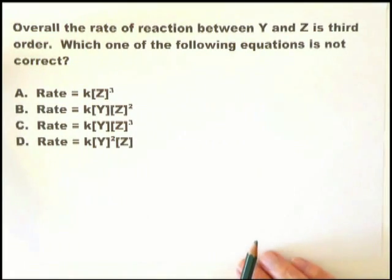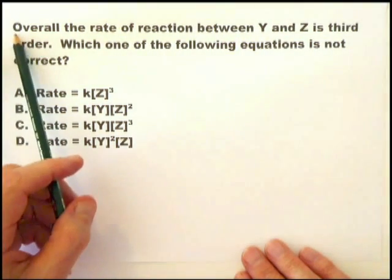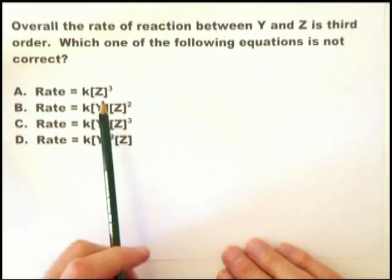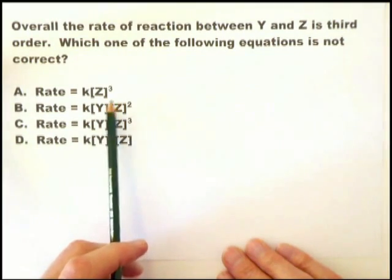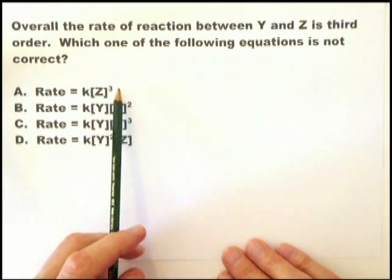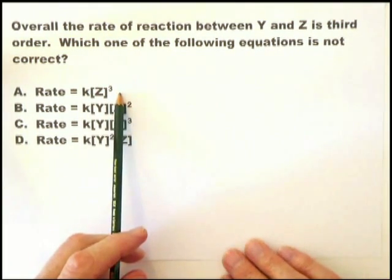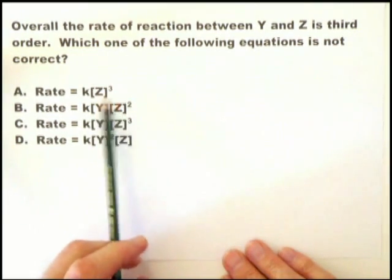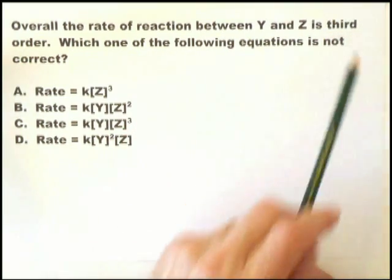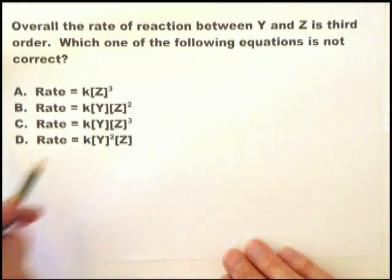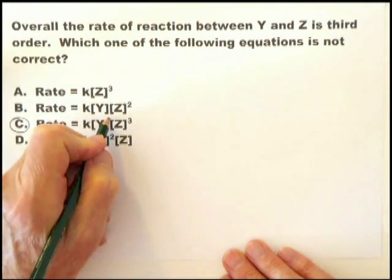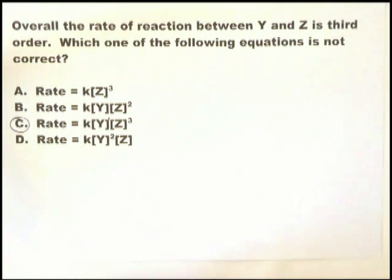In this question, the examiner is simply trying to find out whether you understand the phrase overall rate of reaction, and that is simply the sum of the powers. When you add the powers up, which one is not equivalent to third order? Well, clearly it's C, because this is clearly a fourth order reaction. That's a fourth order, because the y there is one, so that makes it a fourth order reaction.